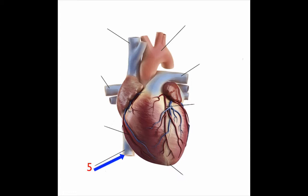Structure number five: this structure is a large vein that carries the deoxygenated blood into the right atrium of the heart. What is this structure?